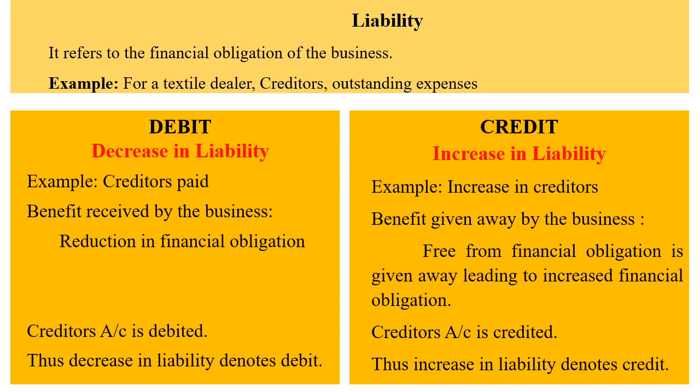Liability refers to the financial obligation of the business. Example for a textile dealer: creditors, outstanding expenses. Debit denotes decrease in liability. Example: creditors paid. The benefit received by the business is reduction in financial obligation, and so the creditors' account is debited. Thus, decrease in liability denotes debit.